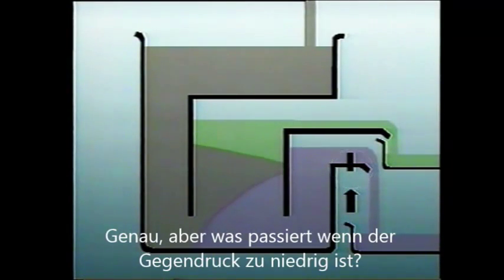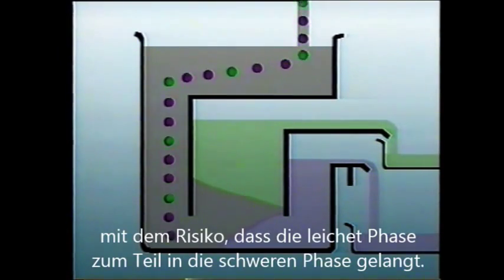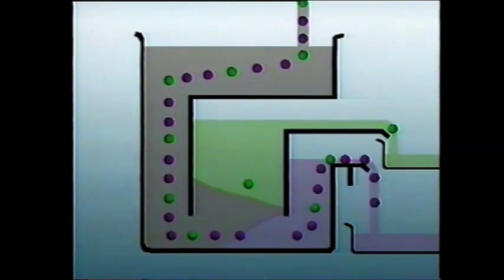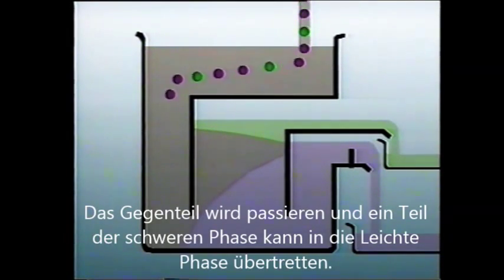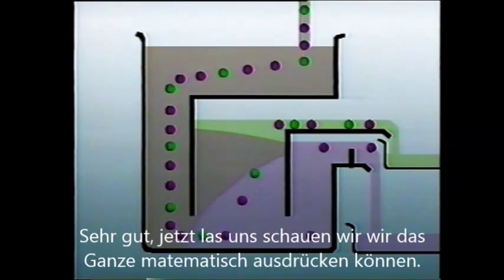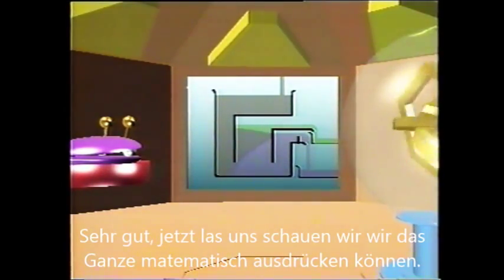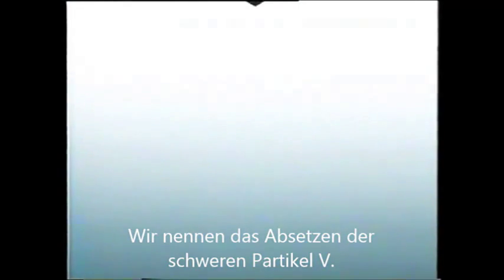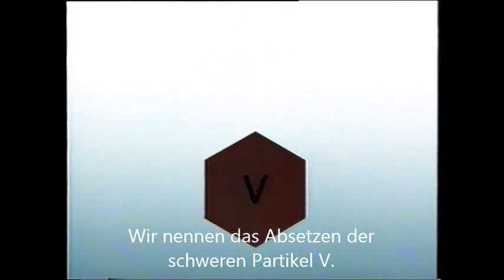But what would happen if the dam is set too low? The position of the interface moves lower, which means there will be a risk of some of the light phase escaping with the heavy phase. And if it is set too high? The opposite will happen, and some of the heavy phase may escape with the light phase. Now let's go back and see how we would express the whole thing mathematically. We call the settling velocity of the heavy phase particles, or globules, V.